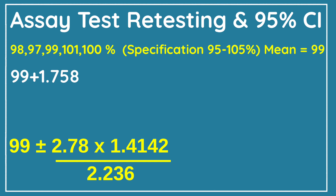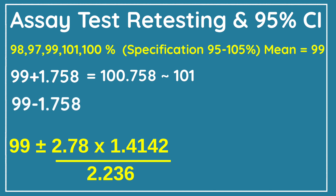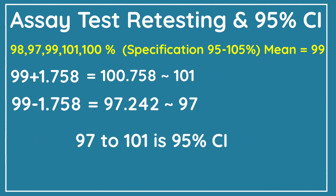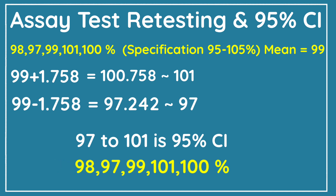First, we add 1.758 to the mean value 99, giving 100.758, which rounds off to 101. Then we subtract 1.758 from 99, giving 97.242, which rounds off to 97. So our 95% confidence interval limit is 97 to 101. All five assay values are between 97 and 101, which means the 95% confidence interval limit is met for all these assay results.